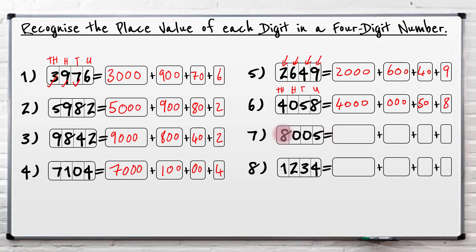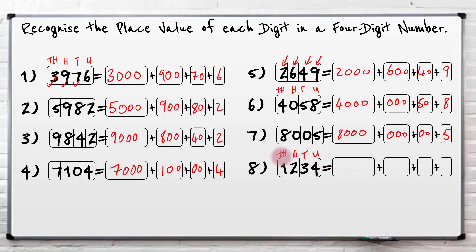Now eight thousand and five. Eight thousands, no hundreds, no tens, five units. Understanding units, tens, hundreds and thousands is so important.